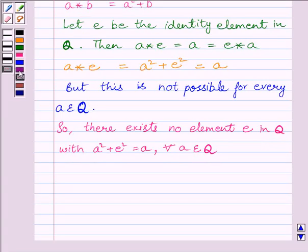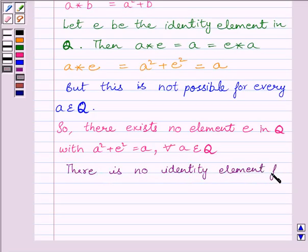So our final answer is: there is no identity element for binary operation star. This completes the session. Hope you understood the session. Take care and goodbye.